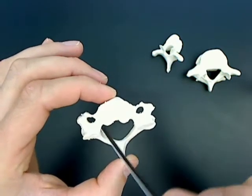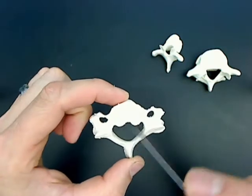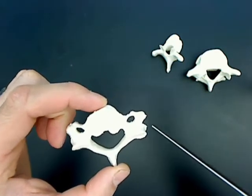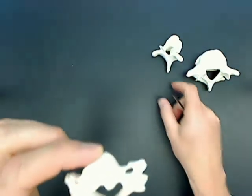All vertebrae have this central hole, which is called the vertebral foramen, but the cervical vertebrae also have the transverse foramen. So that's how you know it's a cervical vertebrae.